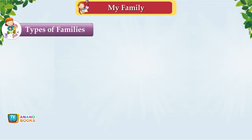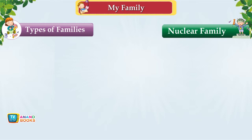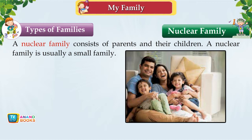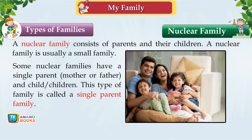Types of Families. We can group families into two main types: nuclear family and joint family. A nuclear family consists of parents and their children. It is usually a small family. Some nuclear families have a single parent — mother or father — and child or children. This type is called a single-parent family.